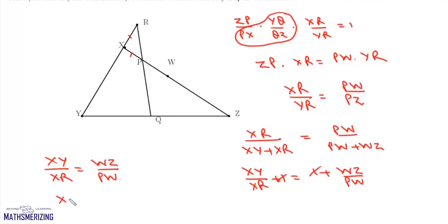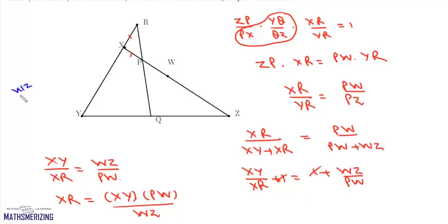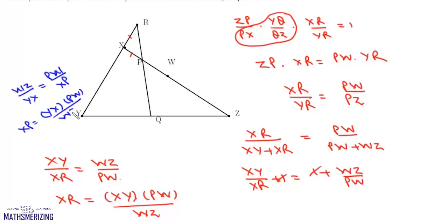From here, XR equals XY times PW upon WZ. The question also gives WZ upon XY equals PW upon XP, so rearranging gives XP equals XY times PW upon WZ. Therefore XR equals XP, which is what we needed to prove.